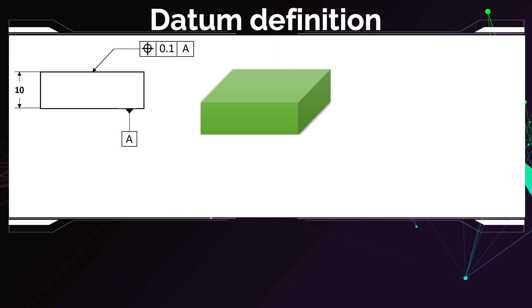Let's have a closer look at datums. If we look at this example here, we see that we have this box and we tolerated the upper surface of the box to the lower surface of the box using a position tolerance of 0.1. So we said the position of the upper surface should have a position tolerance of 0.1 to A, and A is the lower surface. But what is really A? How is A built during the measurement?